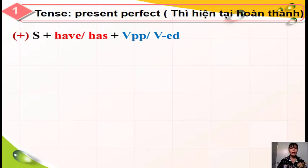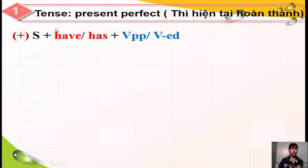'Have' hoặc 'has' do chủ từ quy định. Nếu chủ từ là số nhiều như I, you, we, they, chúng ta sẽ sử dụng 'have'. Nếu chủ từ là số ít như he, she, it, chúng ta sẽ sử dụng 'has'.